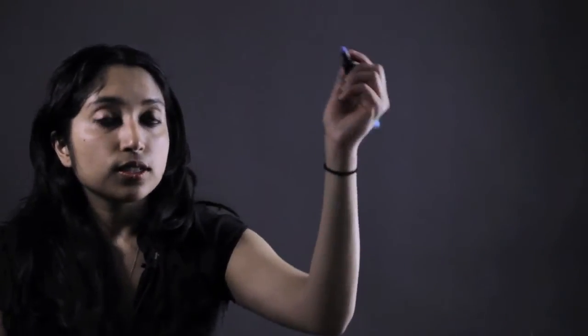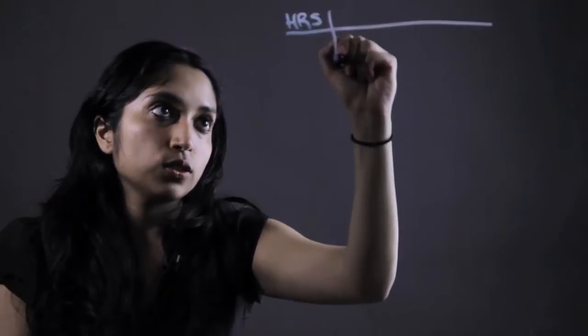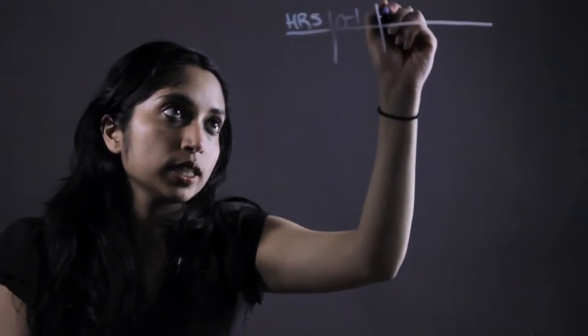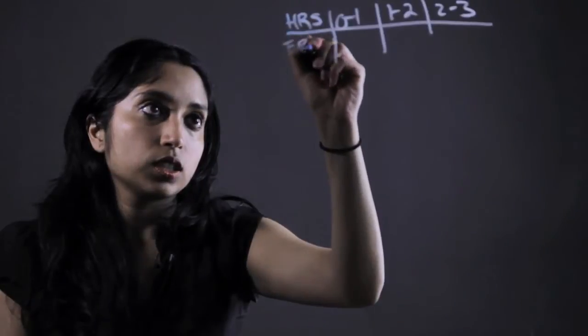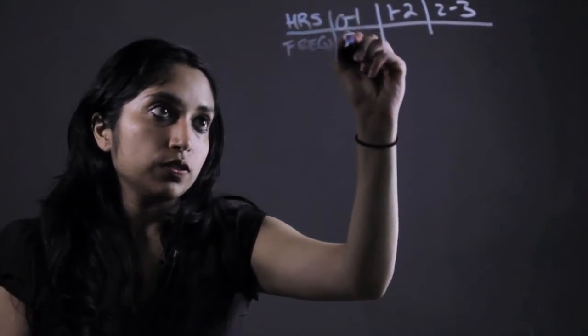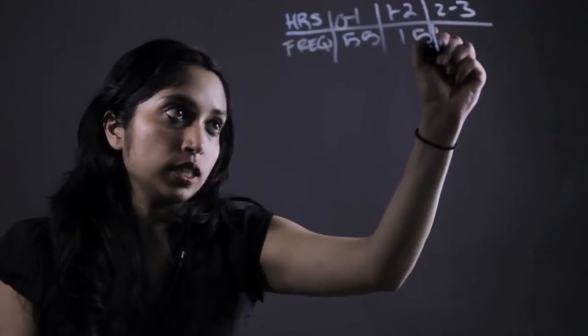It's actually a lot easier than it sounds. Grouped interval data happens a lot when you take surveys because they're trying to simplify it so it's easier to look at. So I'm going to write out a quick example right here. Frequency 55, 15, and 10.